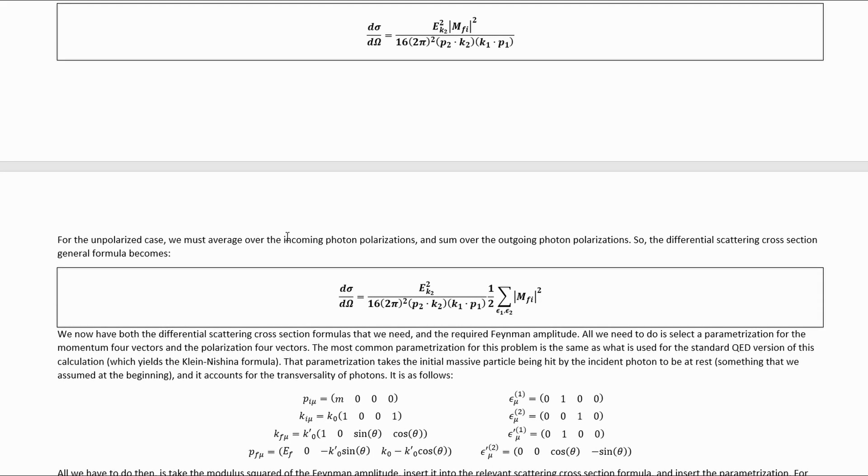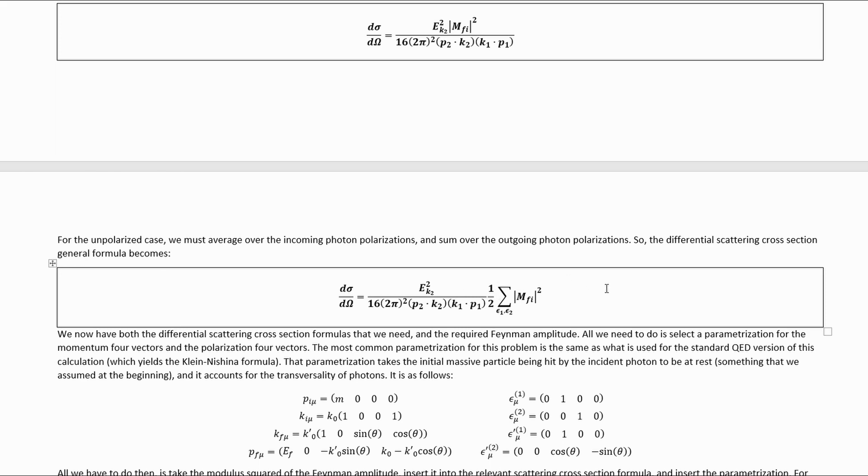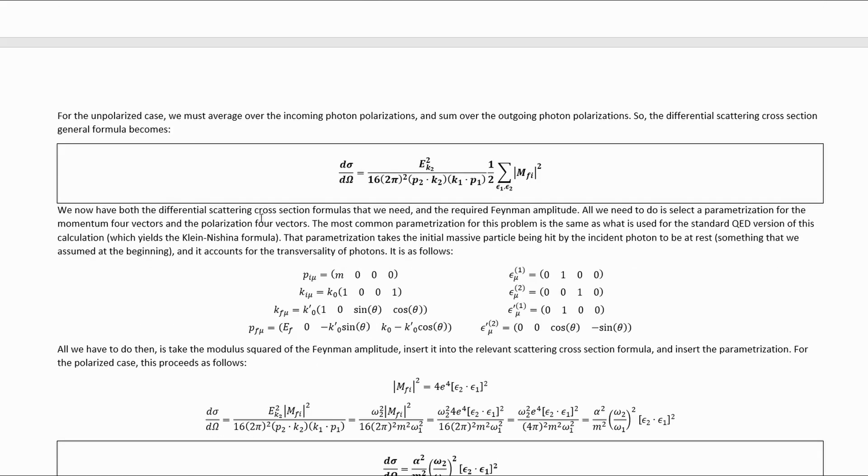For the unpolarized case, all we have to do is average over the incoming photon polarizations and sum over the outgoing photon polarizations, which leaves us with this slightly modified formula. We now have both the differential scattering cross-section formulas that we need and the required Feynman amplitude.